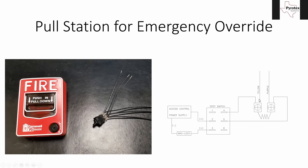In normal operation, contacts two-three and five-six are closed: power comes in from access control, goes across the closed contact to power the lock, and returns on the negative side. Everything works normally — lock is on, alarm is off. When the pull station is activated and the switch flips, one side closes and the other opens. The fire alarm side shorts from terminal four to five, bypassing the resistor, causing the short circuit that tells the monitor module there's an alarm. And the formerly closed contact that powered the lock opens up, turning off the lock so the trapped person can get through the door to the stairwell and safety.